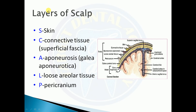The layers of the scalp are remembered by the mnemonic SCALP: S stands for skin, C stands for connective tissue or the superficial fascia, A stands for the epicranial aponeurosis (epineurosis), L stands for loose areolar tissue, and P stands for pericranium.